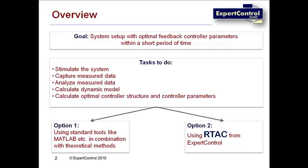When we look at all the tasks necessary, the goal for an optimal closed-loop behavior seems to be light years away. First, we need to understand the dynamics of the technical system, which means finding an adequate stimulation profile to capture the system dynamics as measured data. Then we need to analyze this data with respect to non-linearities, disturbances, and other effects such as stick-slip, hysteresis, and others. If the measured data really represents the actual system dynamics, we can start to determine the mathematical representation of the plant, and in the second and final step, calculate the suitable feedback controller structure and parameters.